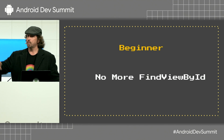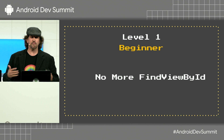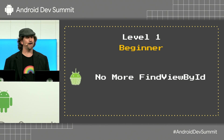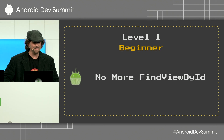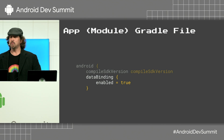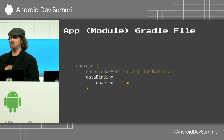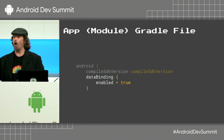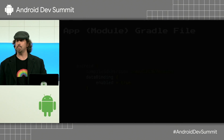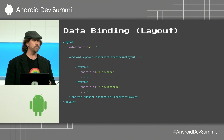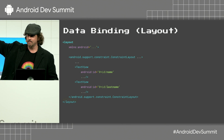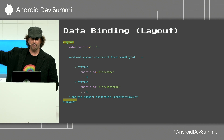So first of all, let's get rid of FindViewById. First, we need to enable data binding. All you have to do is set data binding enabled equals true in your Gradle file, and then you need to put these little layout wrappers around your file.